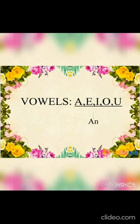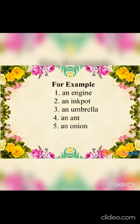Among those 26 letters, the letters A, E, I, O, U — these five friends together are called vowels. Now these vowels have a common friend, that is 'an'. For example: an engine, an ink pot, an umbrella, an ant, an onion.